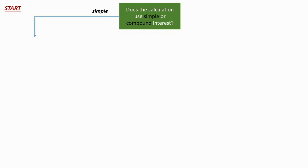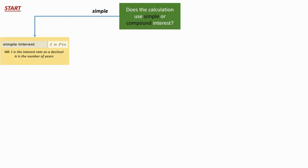In the question, it'll either say that something is compounded, or it will say that it's using simple interest, or potentially it may say that it's adjusted fortnightly or adjusted monthly. 'Adjusted' is another word that could be used for 'compounded.' So as soon as you know that it's simple interest, we're going to move over on the flowchart and use the simple interest formula: I = PiN.